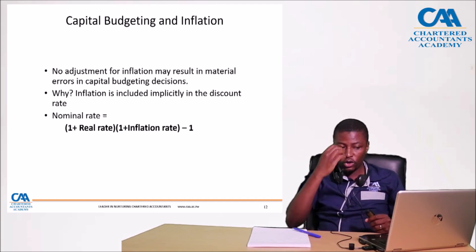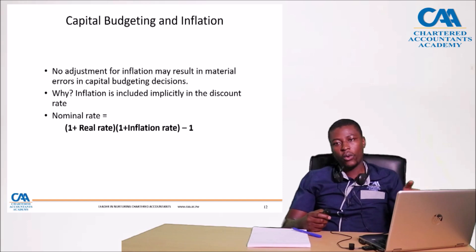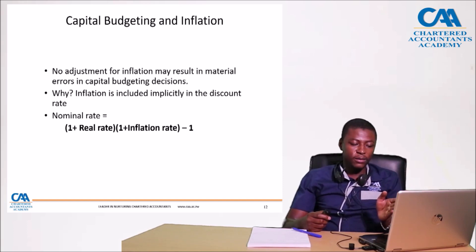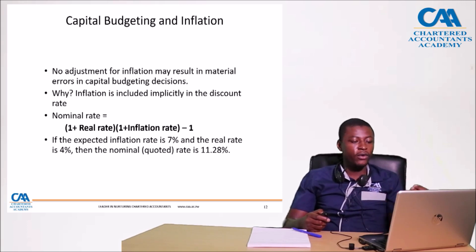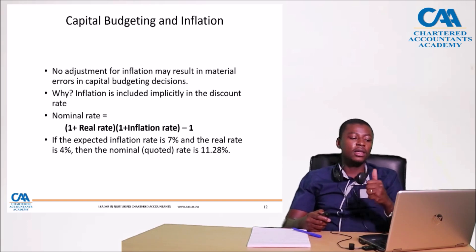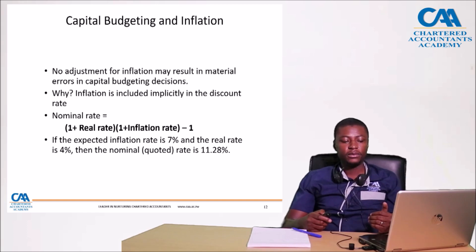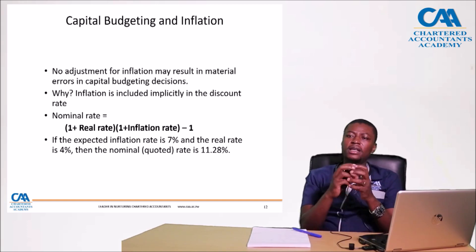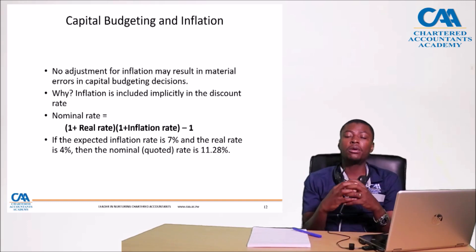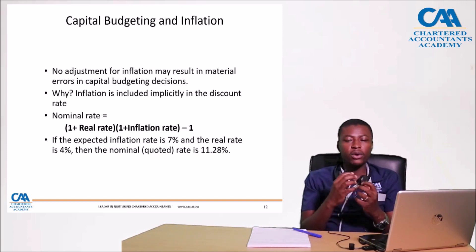What do we mean by a nominal rate? The nominal rate is the rate that takes into account inflation. From a formula perspective: 1 plus the real rate, multiplied by 1 plus the inflation rate, minus 1. To put this into context, if the inflation rate is 7% and the real rate is 4%, then the nominal rate, applying the formula, is 11.28%. The weighted average cost of capital is an example of a nominal rate — it already takes into account future inflationary pressures.